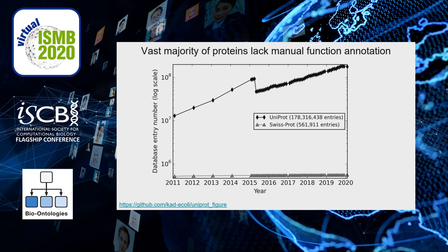Protein function annotation is a big challenge. The standard protein database UniProt now holds approximately 180 million protein sequences, and the number has kept increasing exponentially as shown in the black curve. Meanwhile, SwissProt, the subset of UniProt proteins with manual function annotations, only holds around 560,000 sequences, as shown in the gray curve. This means that more than 99% of proteins are never experimentally characterized or manually annotated, and probably never will.